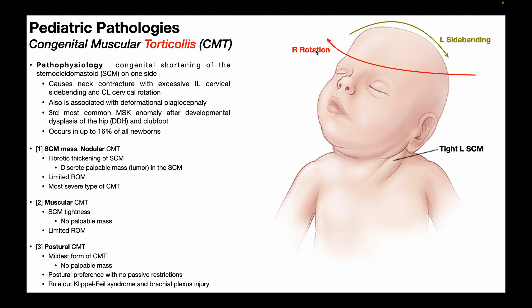There's going to be limited range of motion away from the resting position of the neck. For example, with a tight left SCM, the resting position is left side bending and right rotation, so there would be limited range of motion into right side bending and left rotation. This is the most severe type of congenital muscular torticollis.